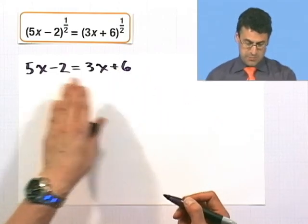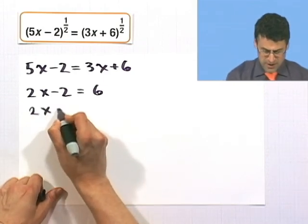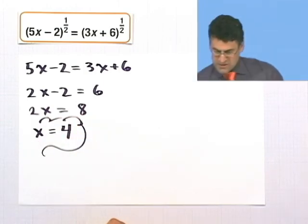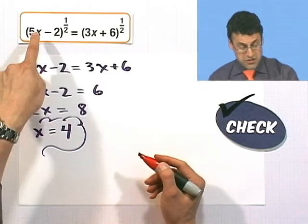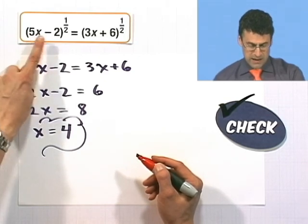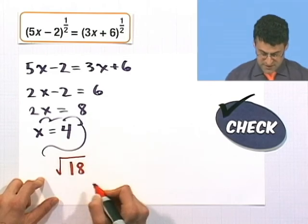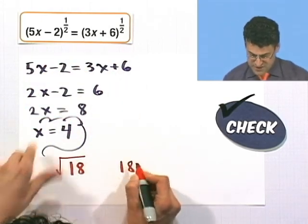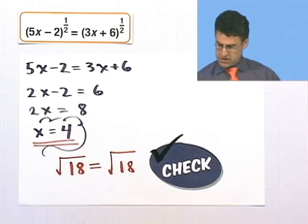That's a very happy equation which I can now solve. Subtracting 3x from both sides gives 2x minus 2 equals 6. Adding 2 to both sides gives 2x equals 8, and therefore x equals 4. Now I always have to check my answer, because with these crazy rational exponents, weird things can happen. Plugging 4 into the original: 5 times 4 is 20, minus 2 is 18, so I get 18 to the 1/2 power, which is √18. On the right side, 3 times 4 is 12, plus 6 is 18, also raised to the 1/2 power. √18 equals √18 — it checks. So x equals 4 is the solution.